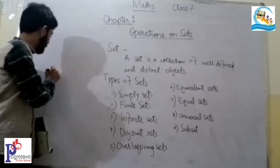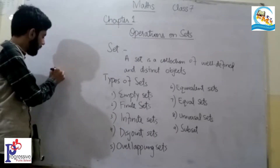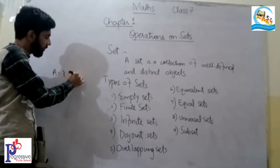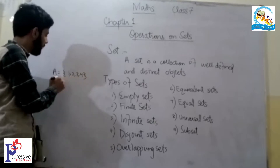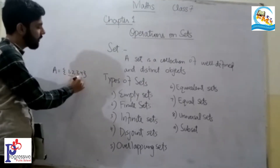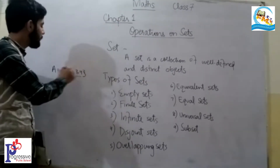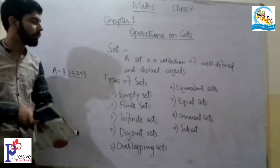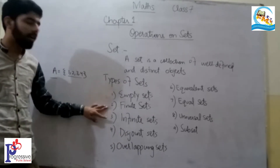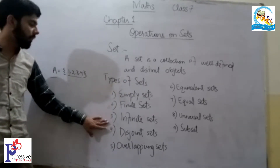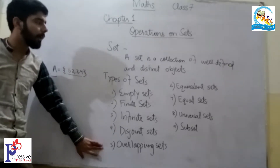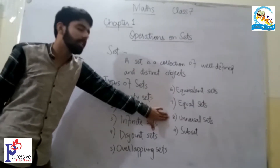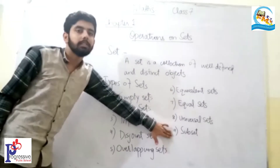For example, Set A = {1, 2, 3, 4}. These are the objects of Set A. There are further different types of sets: empty set, finite set, infinite set, disjoint set, overlapping set, equivalent set, equal set, universal set, and subset.